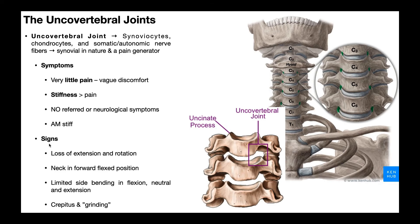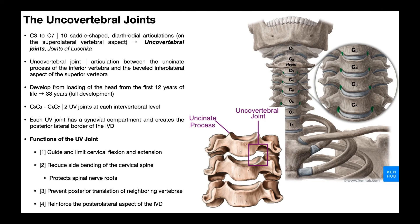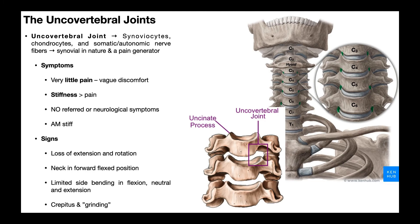Signs you would observe include loss of extension and rotation — the neck tends to be in a forward flexed position — along with loss of lateral flexion and limited side bending in all positions of the neck, whether in neutral, flexion, or extension. There may also be crepitus and grinding through movements of the neck. Hopefully this video gave you a good overview of the uncovertebral joint structure, its functions, and what dysfunction looks like.